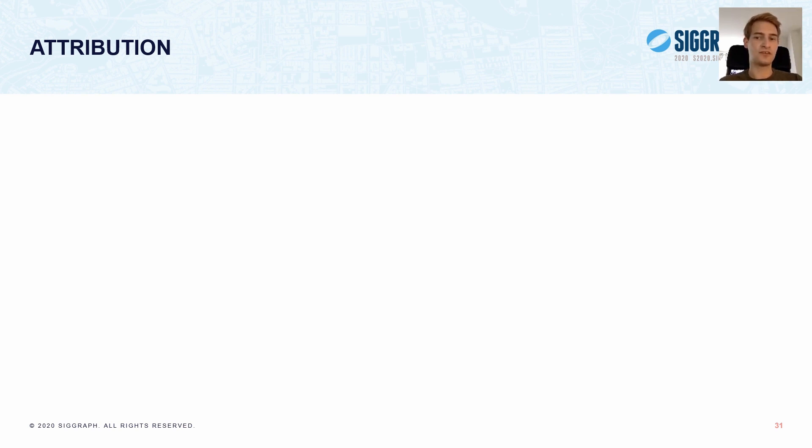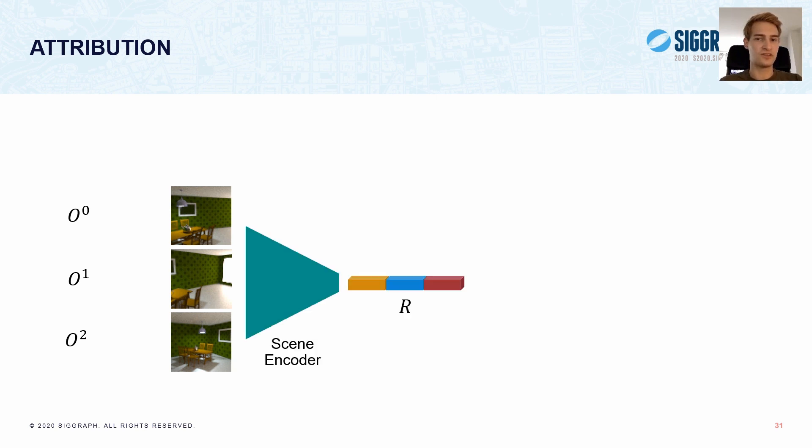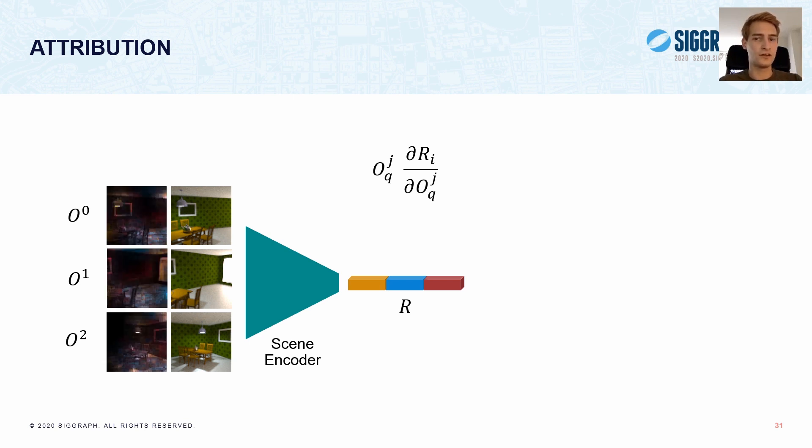We first study the representation in isolation. Specifically, we want to know what information is extracted from the observations to form the representation. So, to do this, we compute the gradients of the representation with respect to the pixels in the observations, and multiply them by the inputs, which are the pixels in the observations. To visualize these products, we false color them using yellow hue for lighting, blue for geometry, and red for materials. The false color images are shown on the left here. And then, we can see that pixels that contribute significantly to a specific partition appear bright.